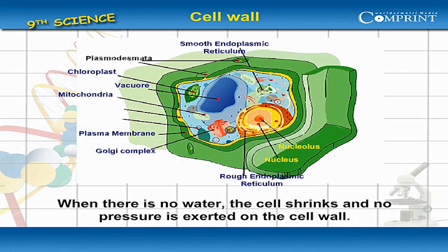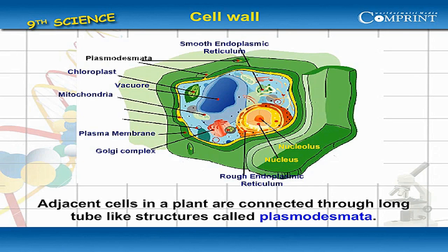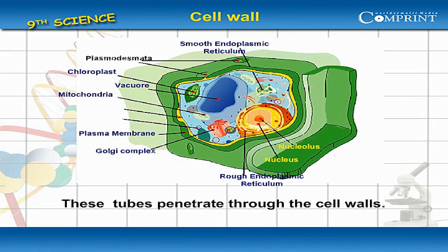When there is no water, the cell shrinks and no pressure is exerted on the cell wall. The plant loses its stiffness and droops — this is called wilting. Adjacent cells in a plant are connected through long tube-like structures called plasmodesmata, which penetrate through the cell walls.